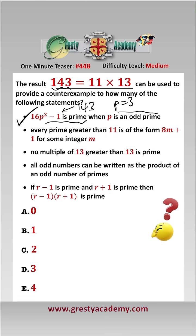For the second one, even though this statement is false, 143 is not prime, so therefore 143 equals 11 times 13 cannot be a counterexample. For the third one, this statement is actually true, so therefore there don't exist any counterexamples.